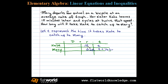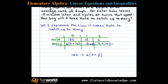Once we get past that hurdle, we fill in the distance column by multiplying rate times time. The distance Kate traveled is represented by 12T. The distance Mary traveled is represented by 6 times (T plus one quarter). When Kate catches up to Mary, they both would have traveled the same distance, so this distance column defines our algebraic setup: 12T equals 6(T plus one quarter).